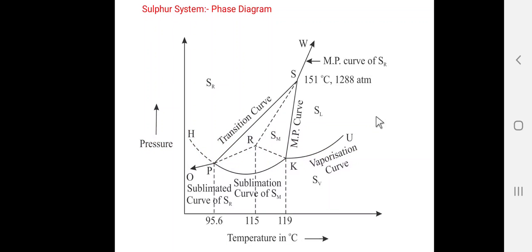This is the phase diagram of the sulfur system, plotted as pressure versus temperature. The sulfur system serves as a very good example of a one-component system displaying polymorphism. When we consider any phase diagram, it generally contains areas, curves, and triple points.